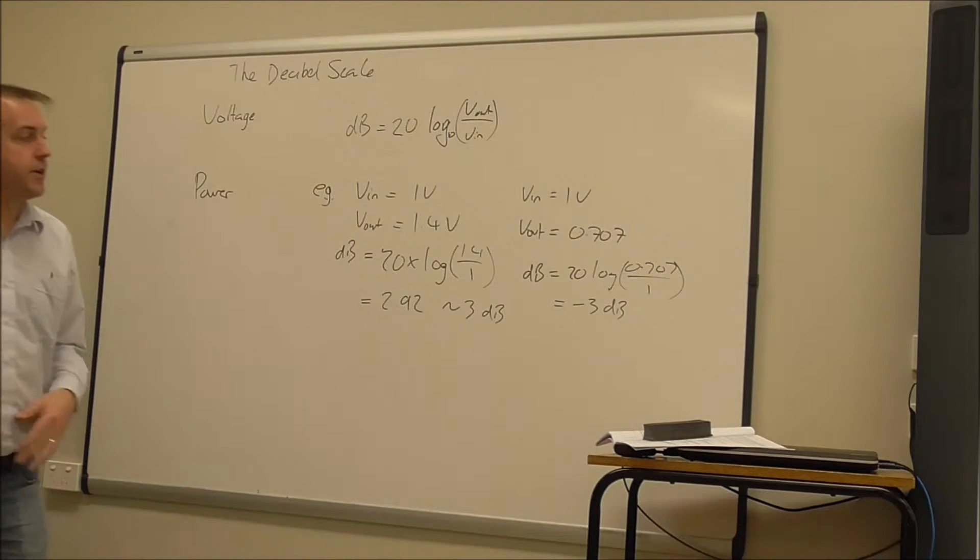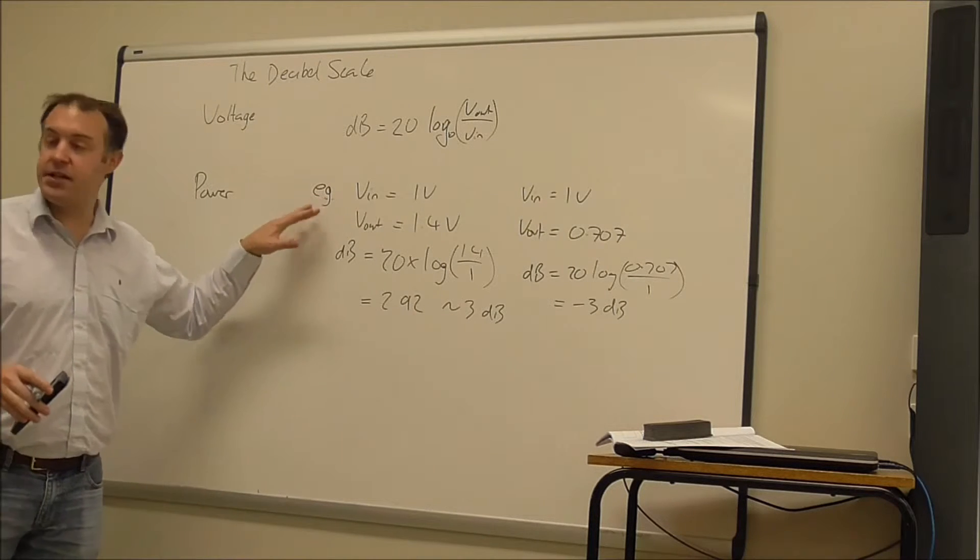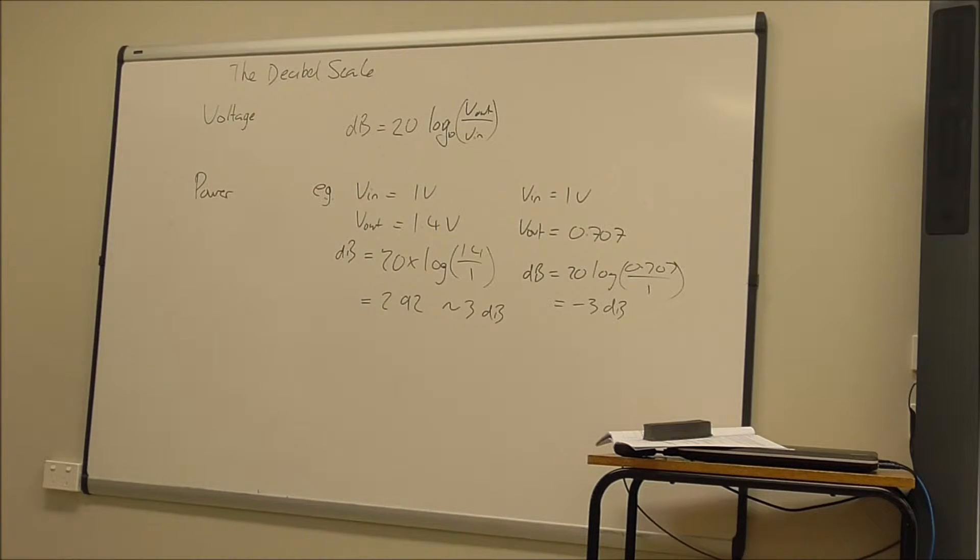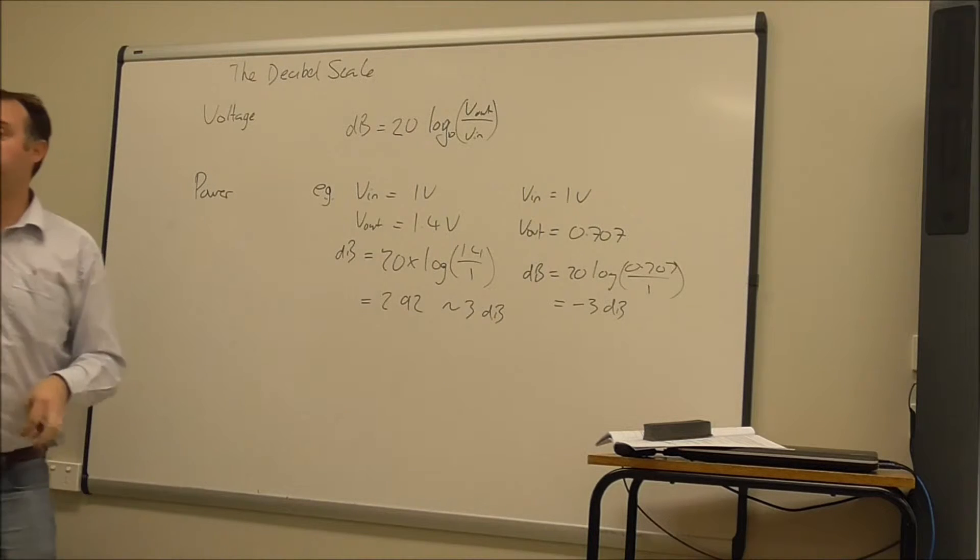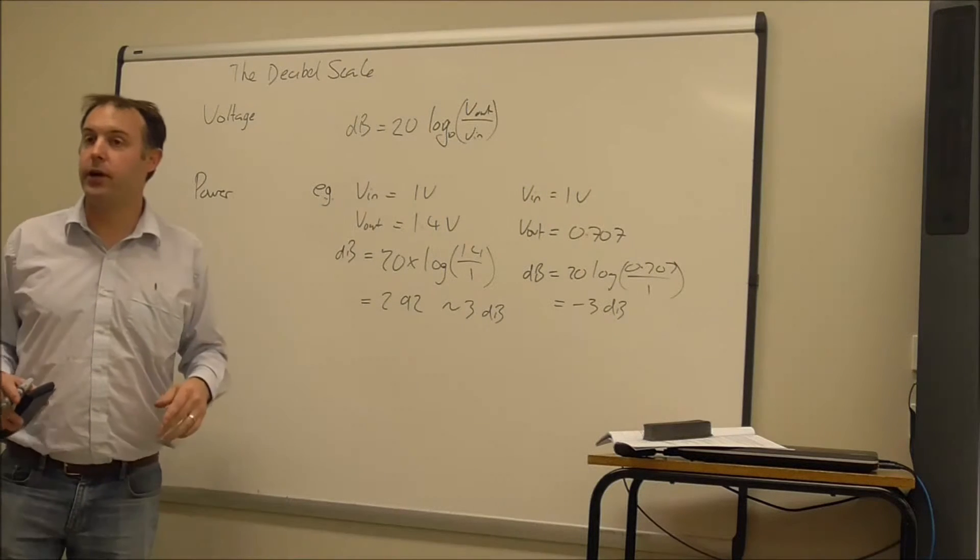So when we look at the decibel scale, it's a logarithmic scale, which means that as the output voltage drops by a factor of 10, the decibel scale will drop by a factor of 1. Each factor of 10 makes it drop by 1.